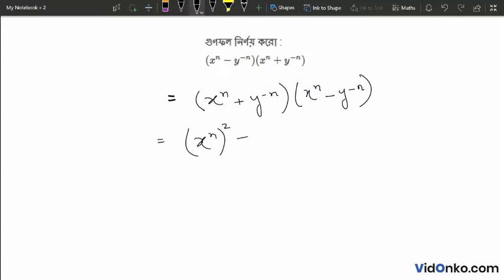This is a square formula. Okay, a square minus b square, which is a plus b into a minus b.